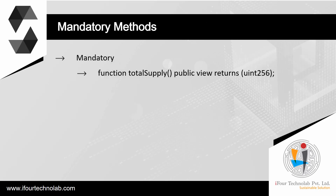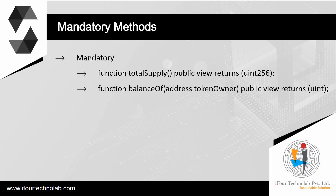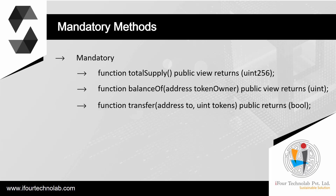Mandatory methods. The function `totalSupply() public view returns (uint256)` is required. ERC20 contracts must expose a view function that returns the current number of outstanding tokens. The function `balanceOf(address tokenOwner) public view returns (uint)` is also required. ERC20 contracts maintain per-account token balances, which must be accessible via a public view function. Solidity makes this easy with public variables, as it will create the corresponding public getter automatically.